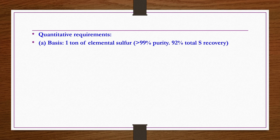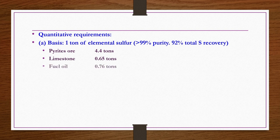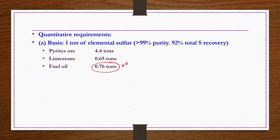Quantitatively, to produce 1 ton of elemental sulphur at greater than 99% purity: pyrites ore 4.4 tons, limestone 0.65 tons, fuel oil 0.76 tons, water 25 tons, and electricity 1800 kilowatt hours are required. The fuel oil requirement is high, so replacing it with cheaper options like coal or pulverized coke would be more economically feasible.